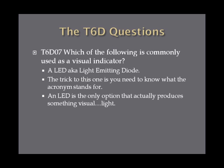Which of the following is commonly used as a visual indicator? An LED, or light emitting diode, can be used as a visual indicator because it produces light. The trick on the exam is that you have to know what LED stands for. Of all the possible answers, an LED is the only option that actually produces something visual, which is light.